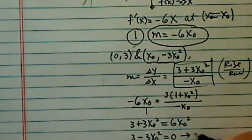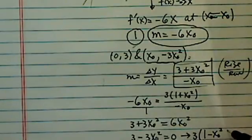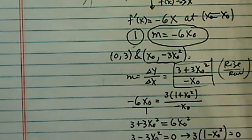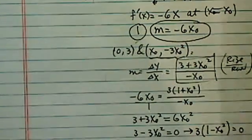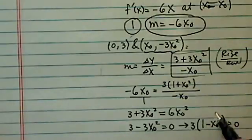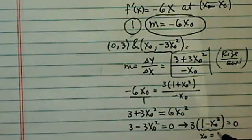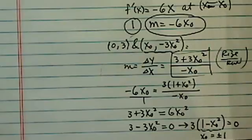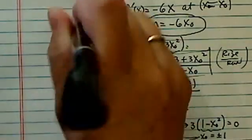Now, factor that, we'll have a 3. 1 minus x0 squared is equal to 0. And then, I'm running out of room here, but one more line. This is not 0, so this one says x0 is equal to plus or minus 1. Giving that, let's go back to the picture here.